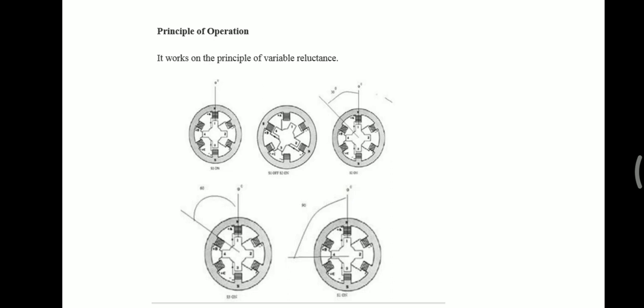Mode 2 is the two phase on mode. In this mode, two phases are excited simultaneously. When phases A and B are energized together, the rotor experiences torque from both phases and comes to rest at the point midway between the two adjacent full step positions. If B and C are excited, the alignment between stator axis A and rotor pole 3 axis is equal to 45 degrees.